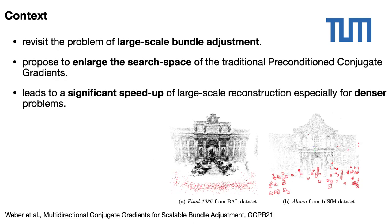We revisit the problem of large-scale bundle adjustment by enlarging the search space of the traditional preconditioned conjugate gradients. We have called this technique multidirectional conjugate gradients, MCG, and it leads to a significant speed-up of large-scale reconstruction, especially for denser problems.